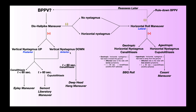Alternatively, you could treat an anterior canal canalolithiasis with what's called the deep head-hanging maneuver. So if a Dix-Hall-Pike maneuver reproduced vertical downbeating nystagmus that lasted less than 60 seconds, you could either do the Epley maneuver or this deep head-hanging maneuver.